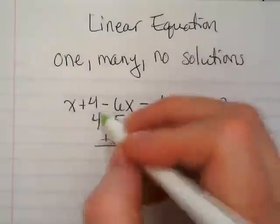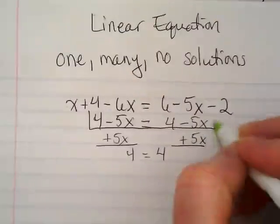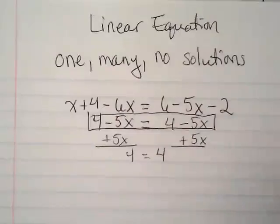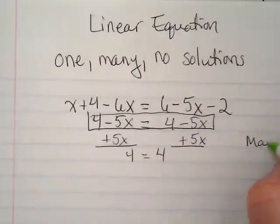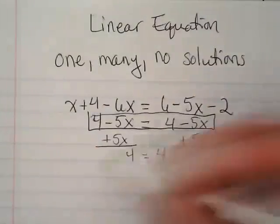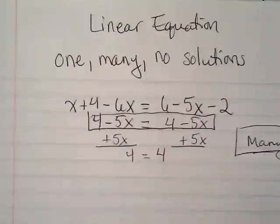And really, as soon as I saw this, I could have stopped there. It's always best, though, to try to solve for the x, just to make sure you didn't make some mistake earlier. Basically, what this is saying is that I could put pretty much any number in for x into this equation, and it would still work.